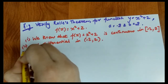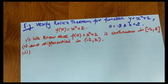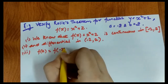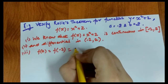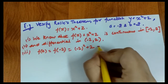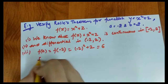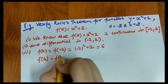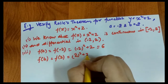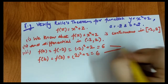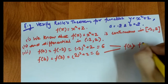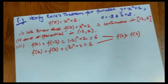The third condition: we check f(a) and f(b). f(-2) = (-2)² + 2 = 4 + 2 = 6. f(2) = (2)² + 2 = 4 + 2 = 6. So f(a) = f(b) = 6, and the third condition is satisfied.